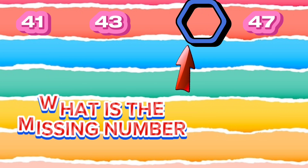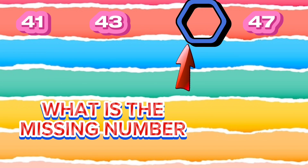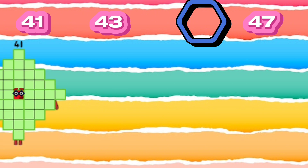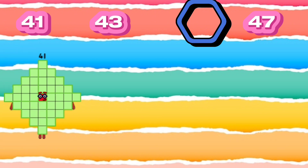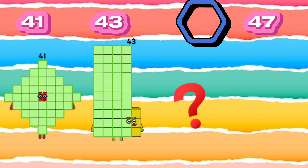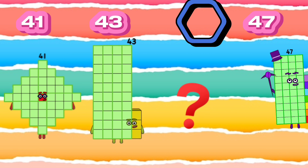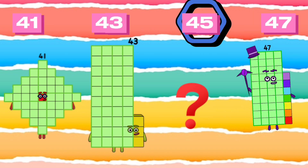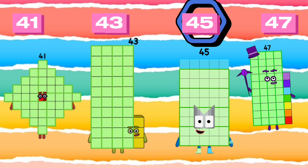What is the missing number? 41, 43, 47. The missing number is 45. The number sequence is 41, 43, 45, 47.